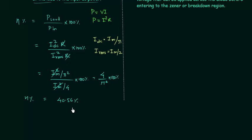40.56% efficiency is really low and this is one of the disadvantages of a half wave rectifier. When we study full wave rectifiers we will see the efficiency is much larger than 40.56%. This is all you need to know about the efficiency of a half wave rectifier.